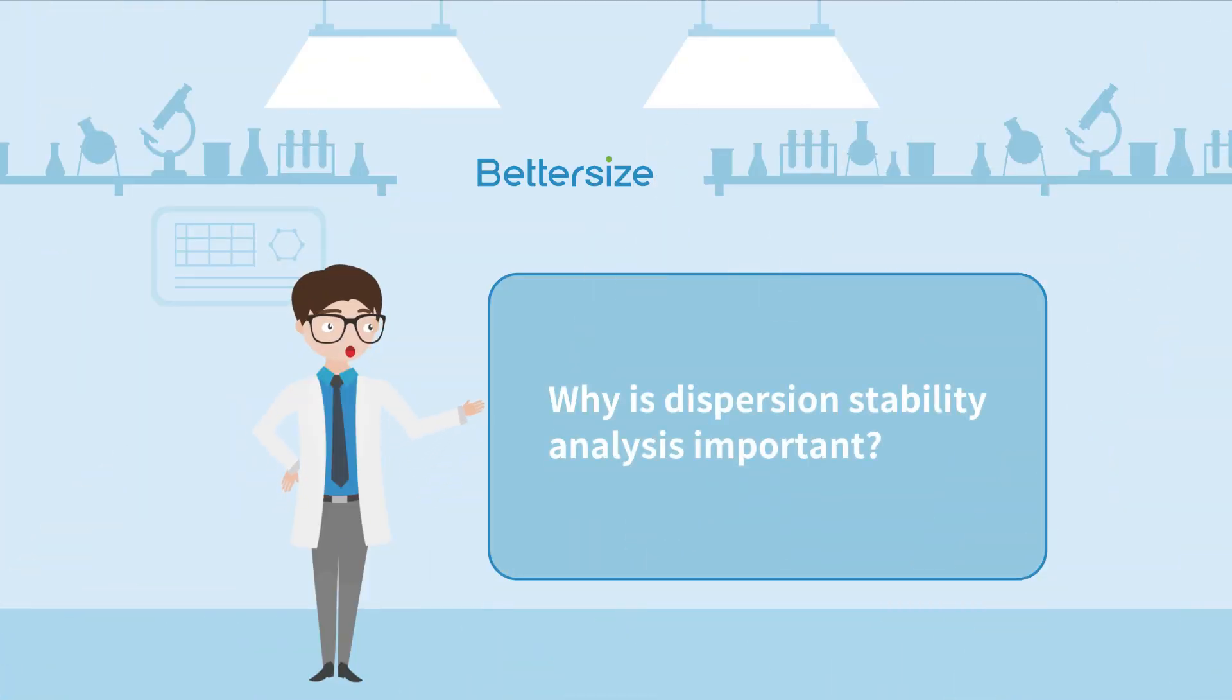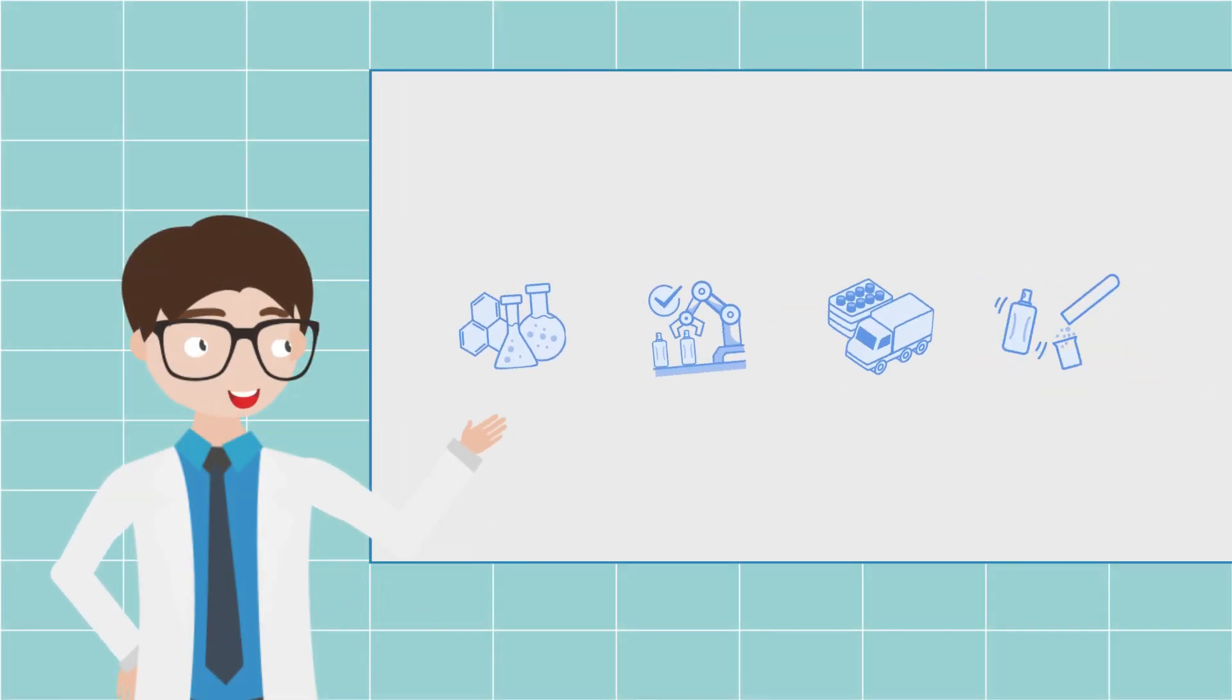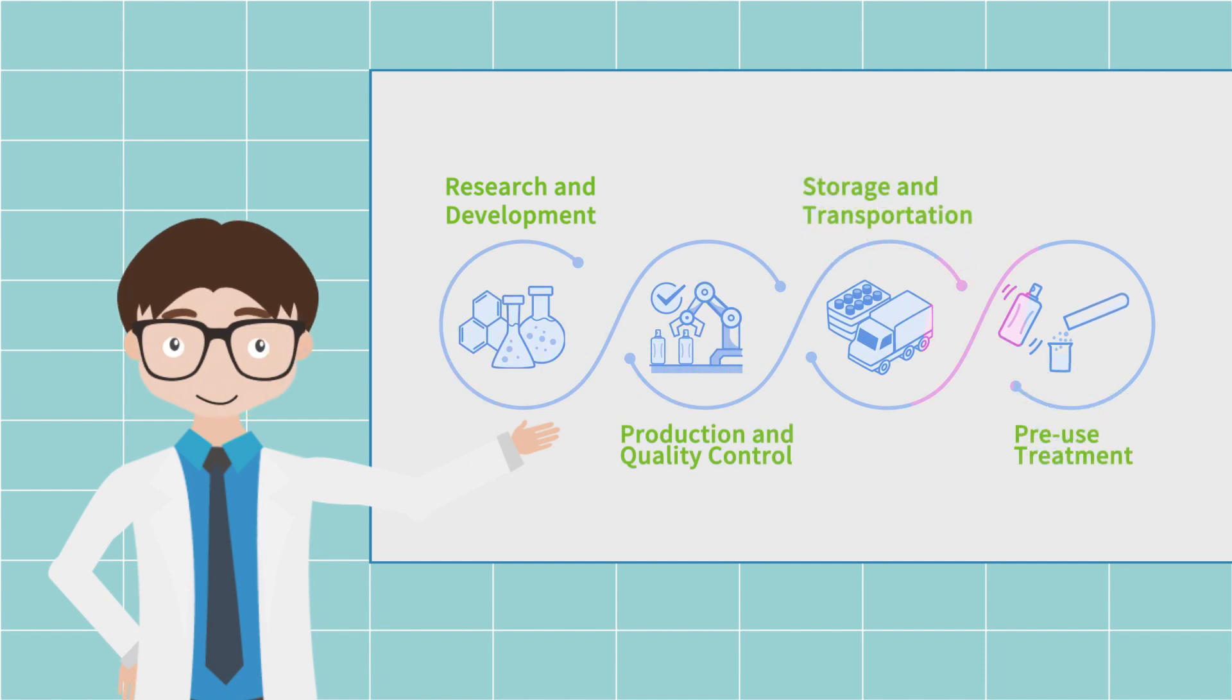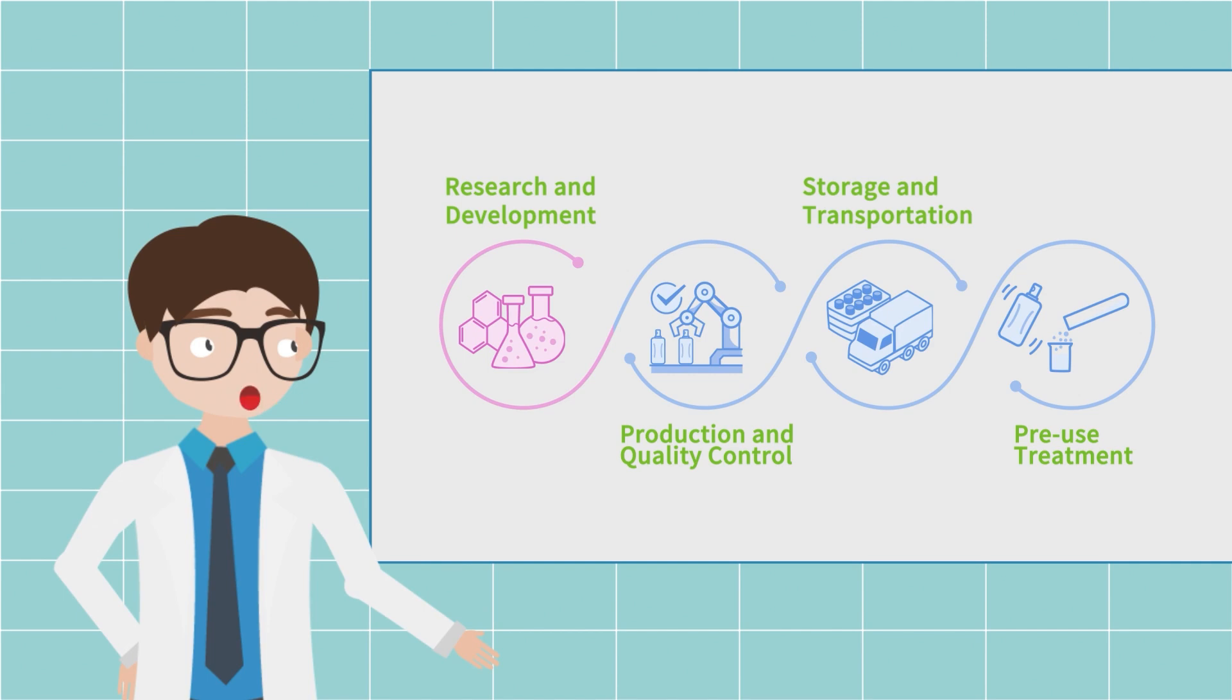Why is dispersion stability analysis important? Understanding dispersion stability is essential throughout the product's life cycle. By assessing stability early in the development process, scientists can identify potential issues and refine formulations to ensure long-term product stability and performance.